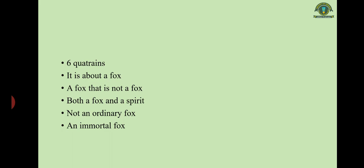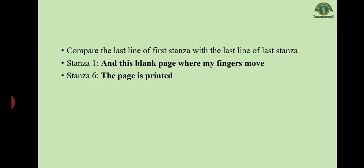The Thought-Fox is a remarkably representative poem of Hughes, written in six quatrains. It is about a fox, apparently, as the title suggests — but not a real fox. Hughes says in Poetry in the Making it is a fox which is both a fox and a spirit. It is not an ordinary fox because it does not belong to the natural world or wildlife; rather, it is a fox created by an artist — and for this very reason, it is an immortal fox that will not die.